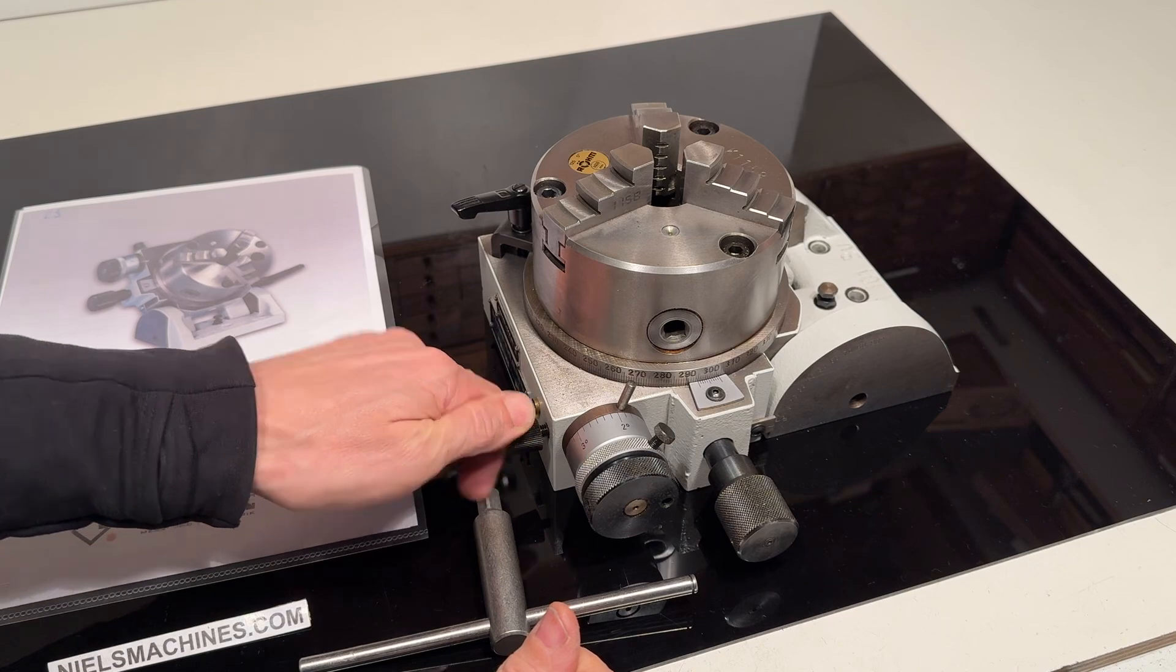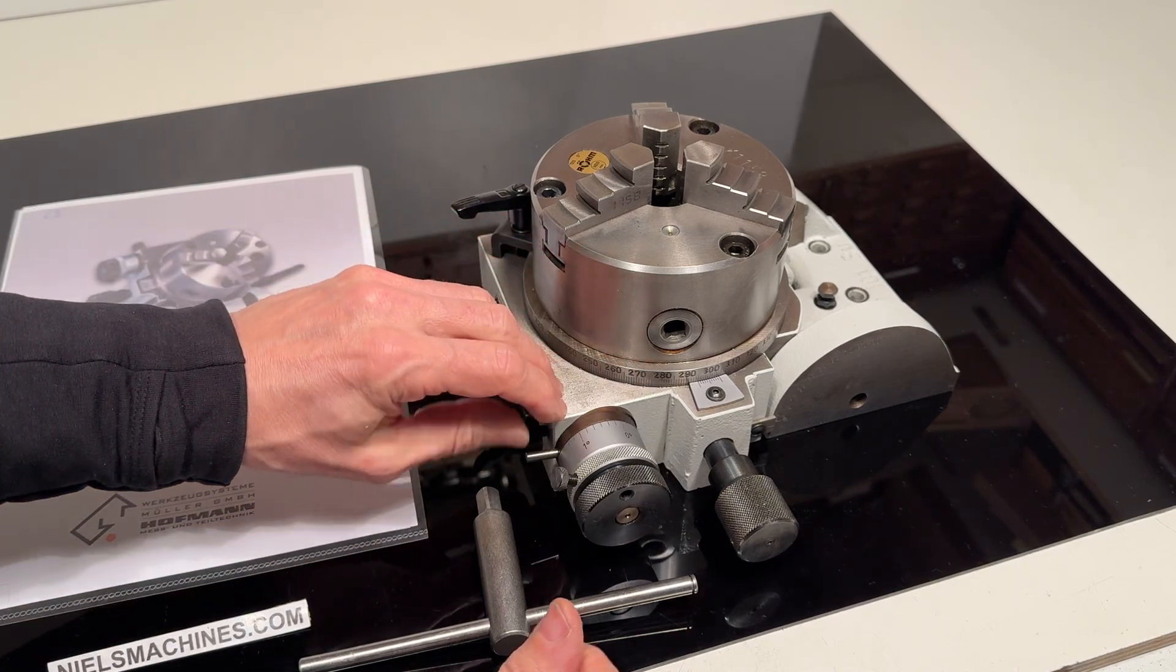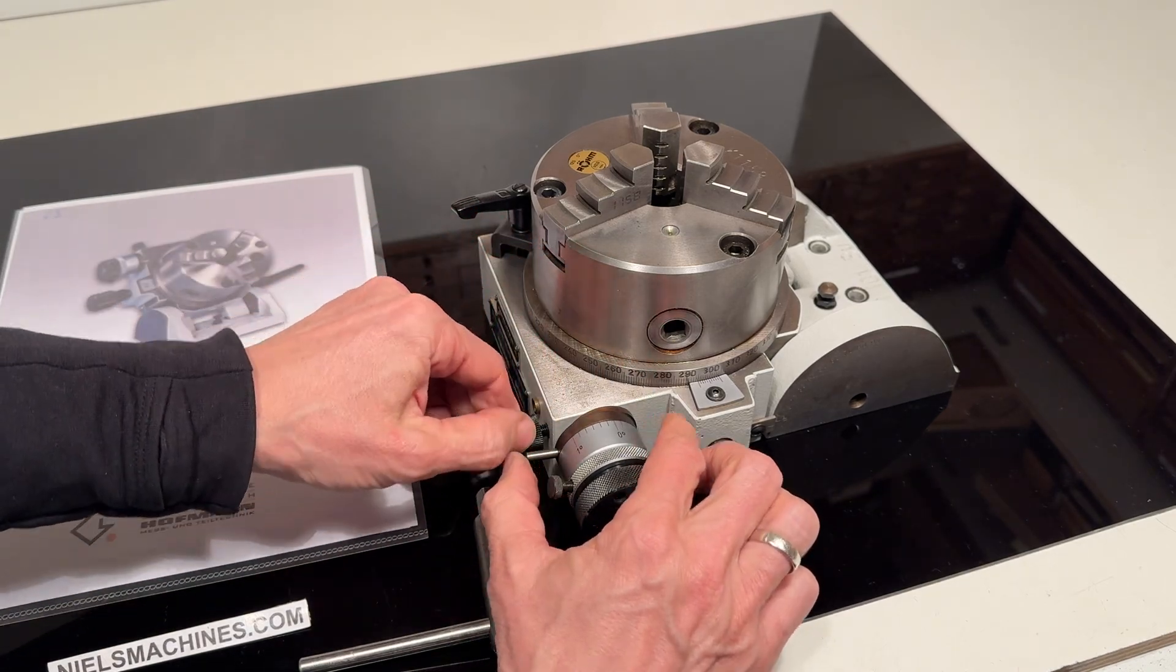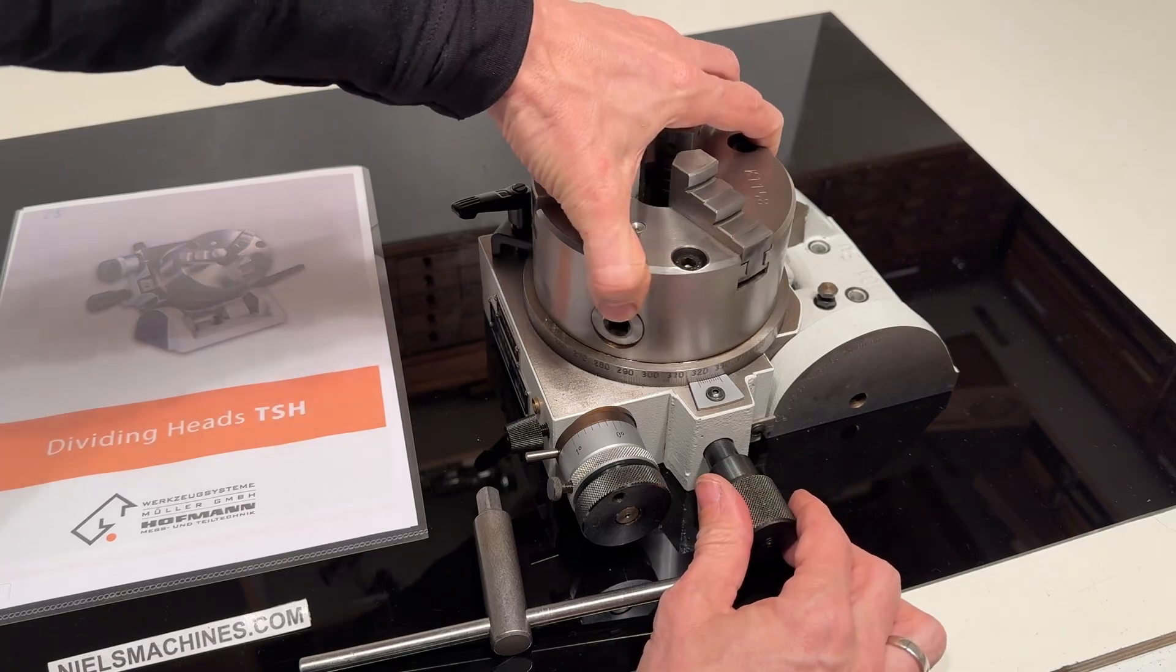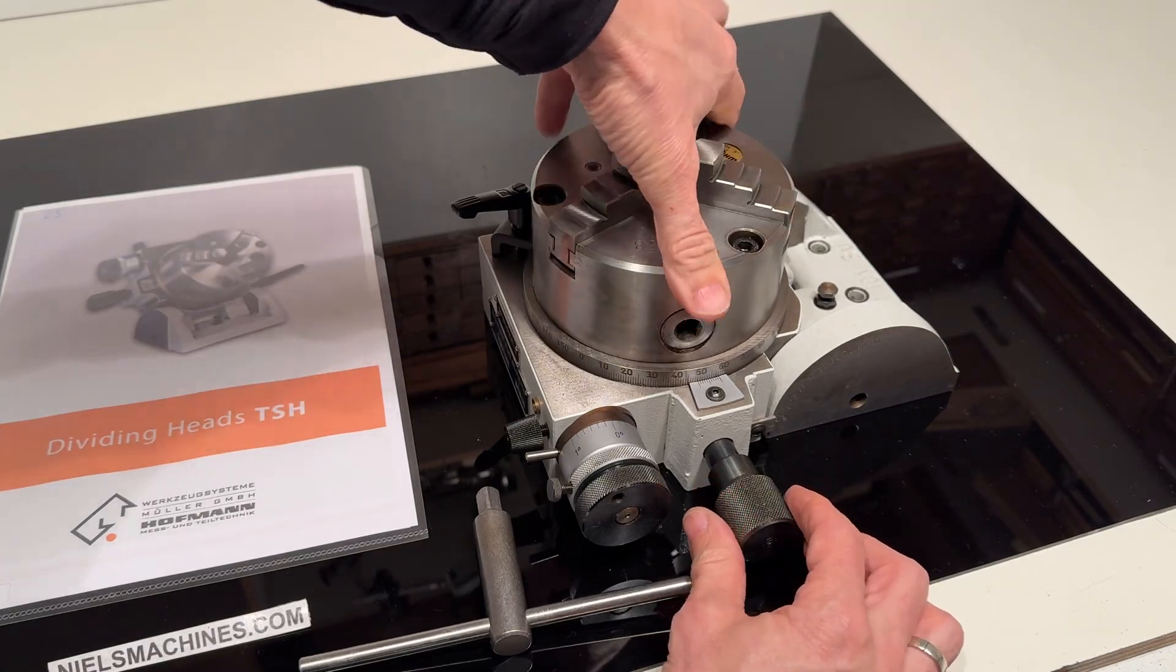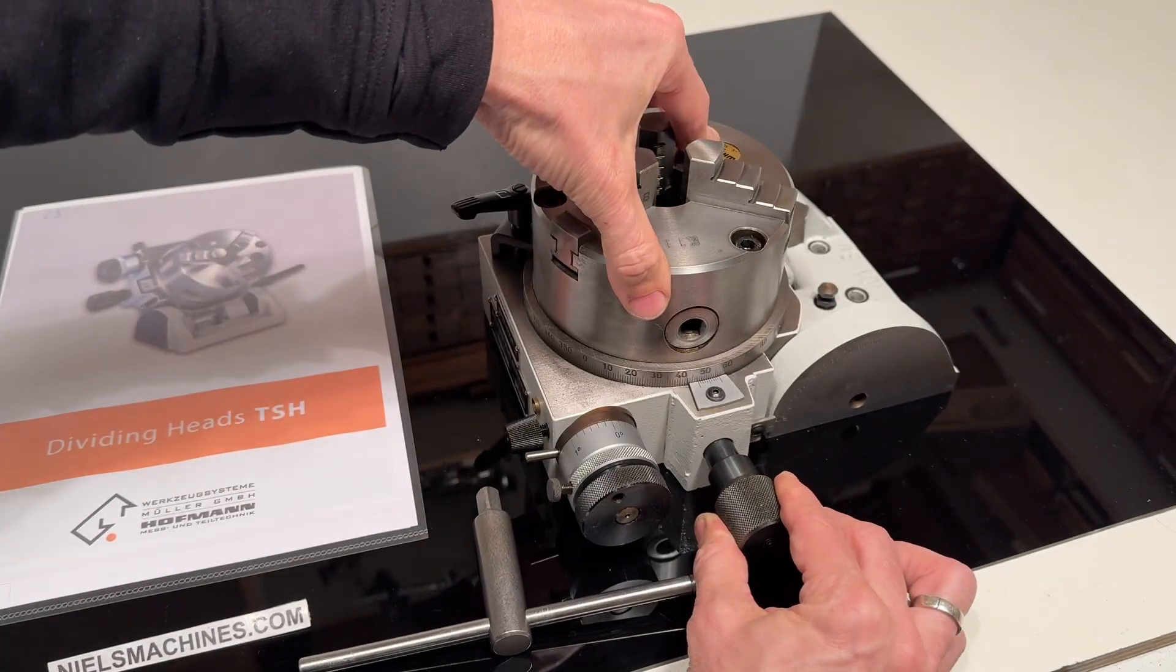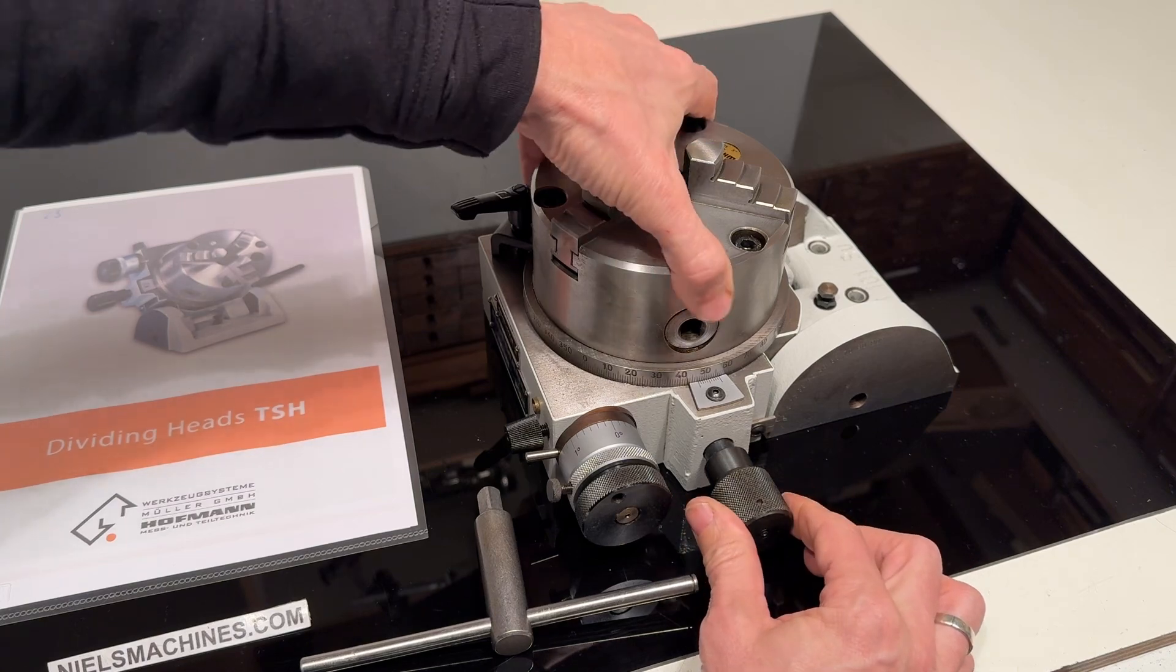Also here it is possible to unlock it with the X-Center and then you can freely rotate it. And here activate the direct dividing.